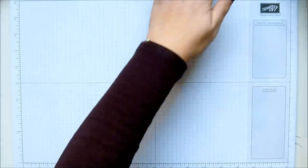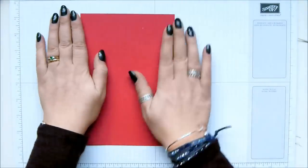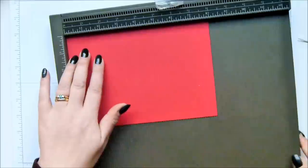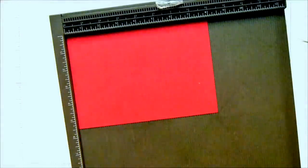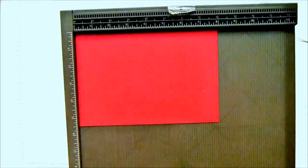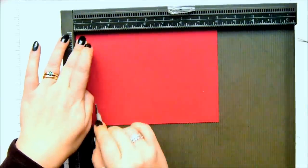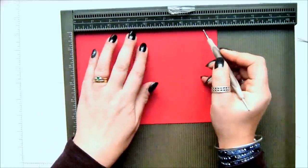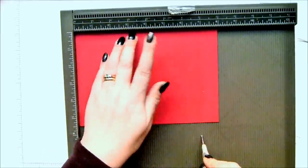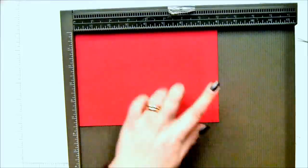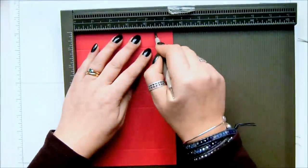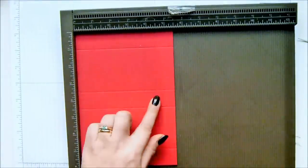My piece of cardstock, beautiful real red, is eight by five and a half inches, which is twenty and a half by fourteen centimeters. With my stylus on the long side, score at one inch, three and a half, four and a half, and seven inches, which in metric is two and a half, nine, eleven and a half, and eighteen. Whizz it round and score at one and four and a half inches, which is two and a half and eleven and a half.